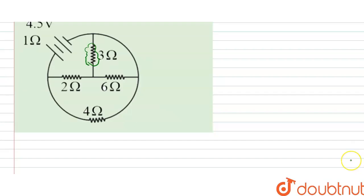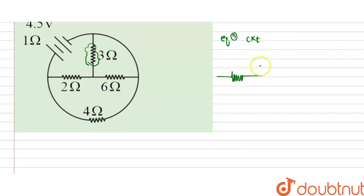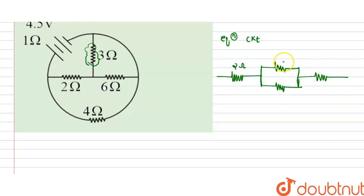We find out the equivalent resistance by writing down the equivalent circuit of the given circuit. In the equivalent circuit, one resistance is here, and two resistances are connected in parallel — one here and another here, connected with each other. One more resistance is in series. The values are: 2 ohm, 3 ohm, 6 ohm, and 4 ohm.